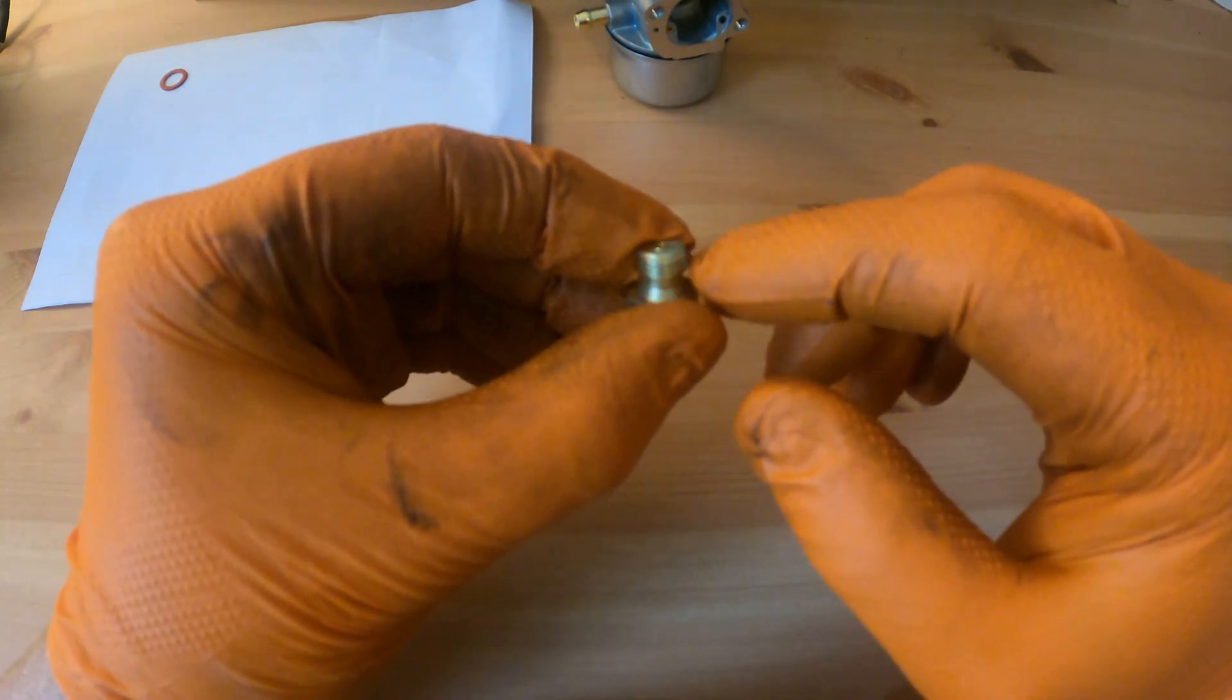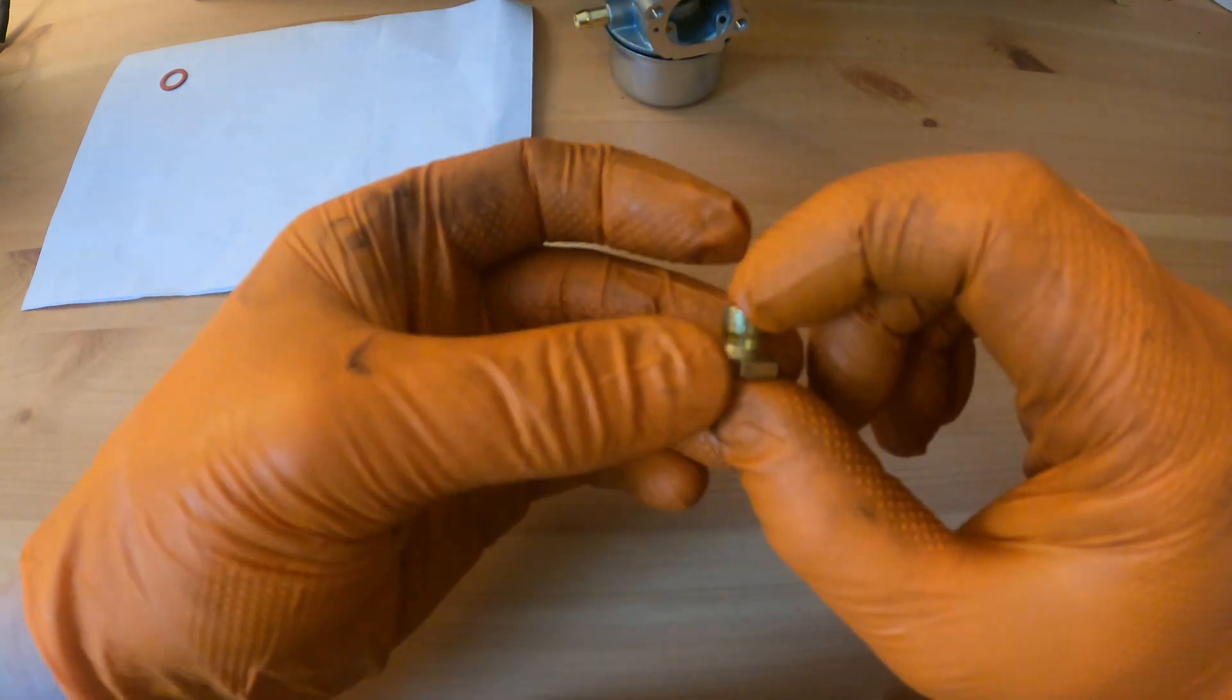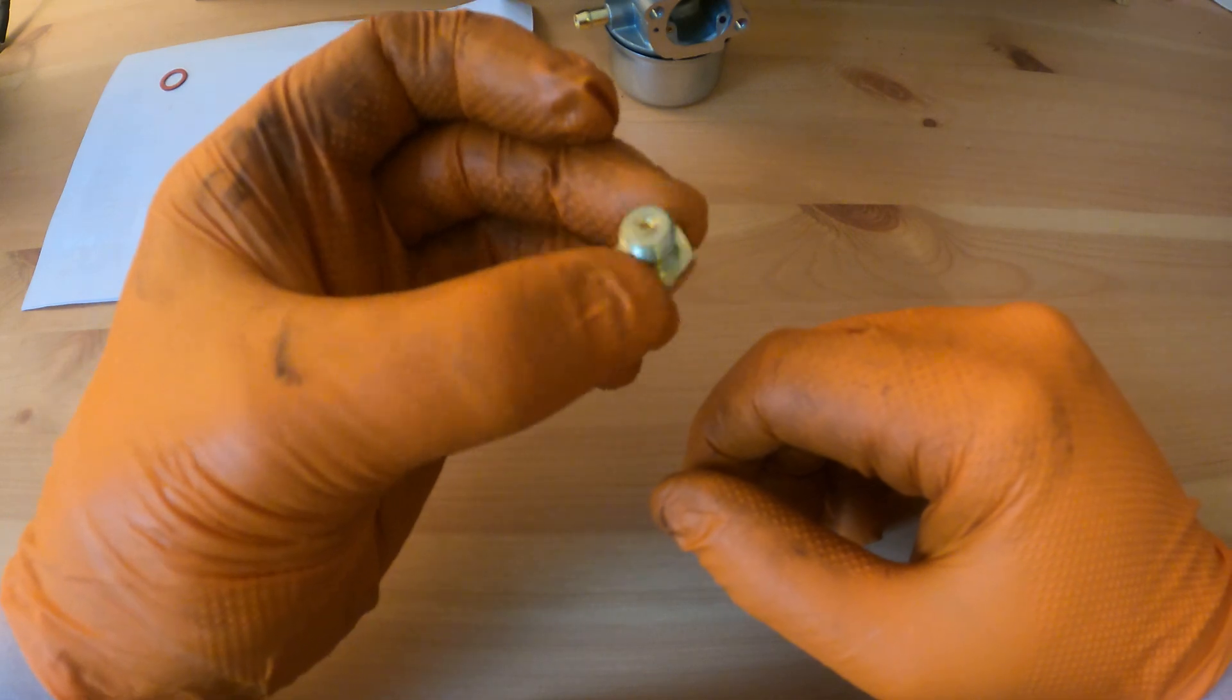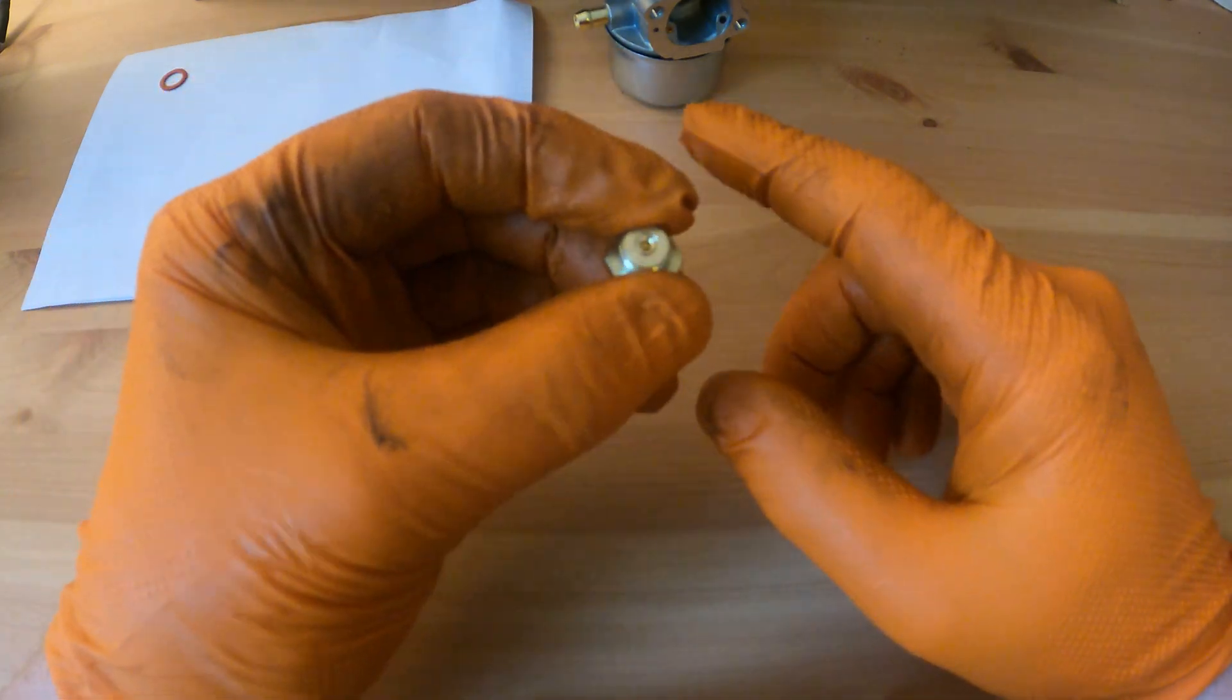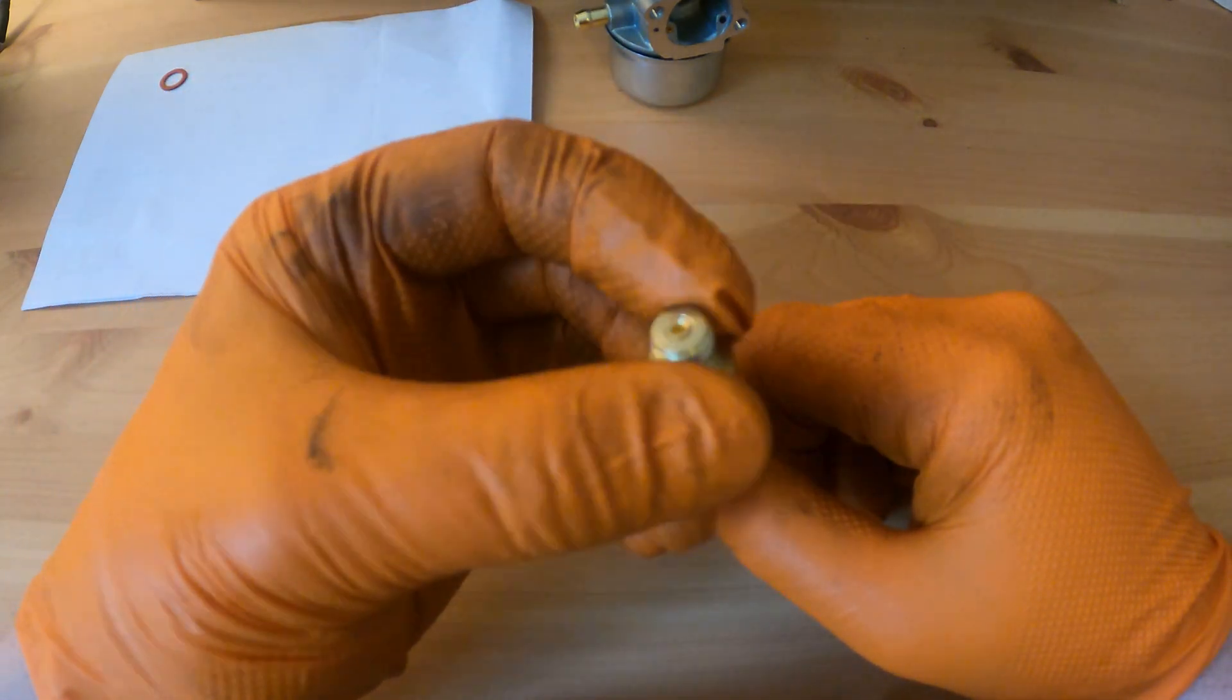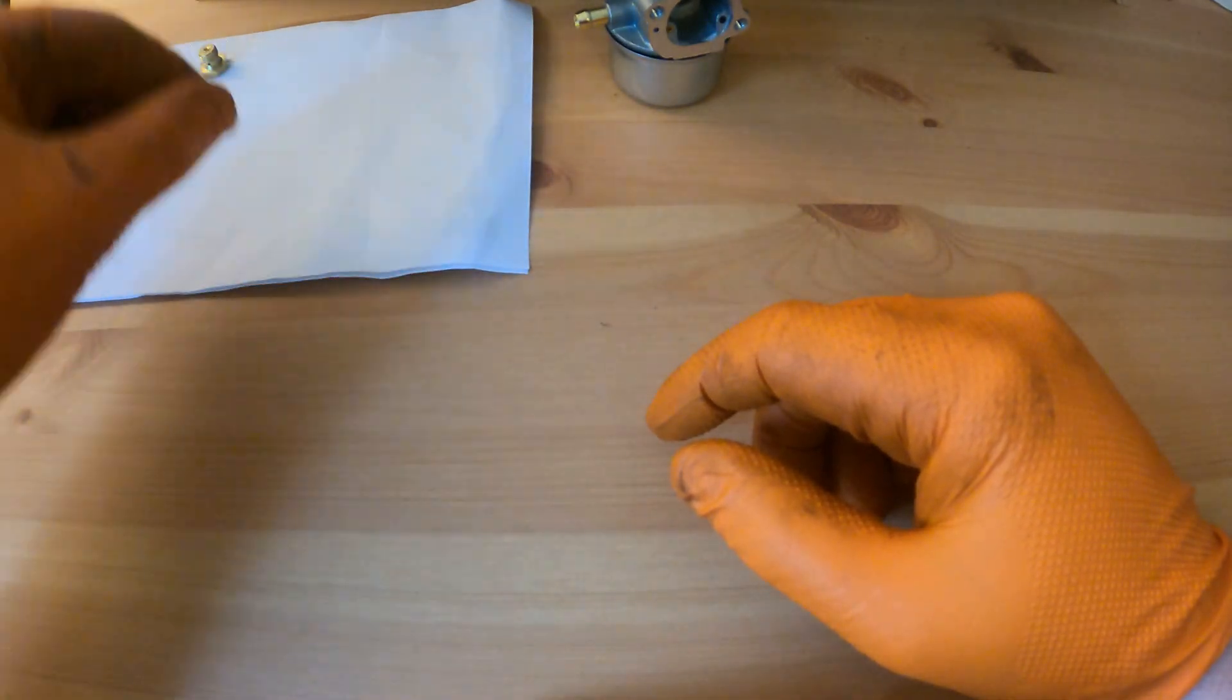You do really need to ensure that that is sparkling by the end of cleaning it because the hole is so fine. With this carburetor we've only got one main jet there, so if that gets fouled the engine's not going to run. Put that to one side and we'll move on to the next step.